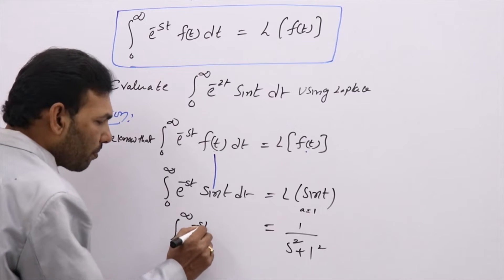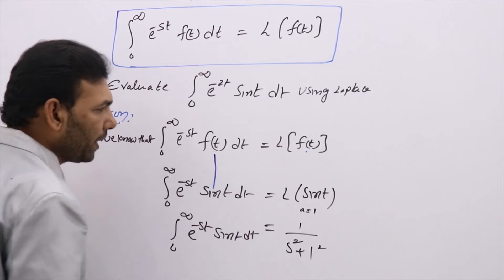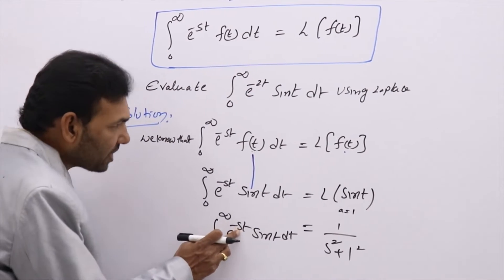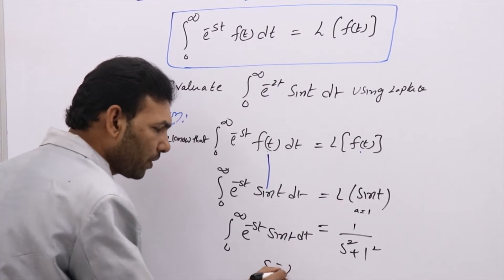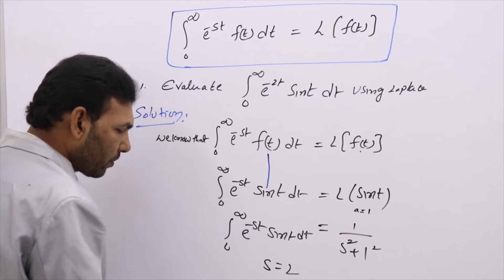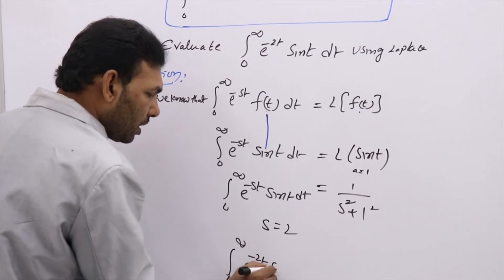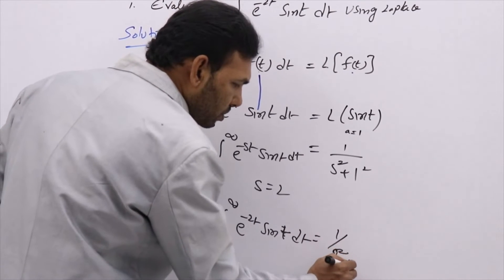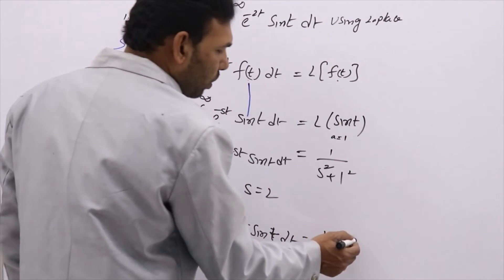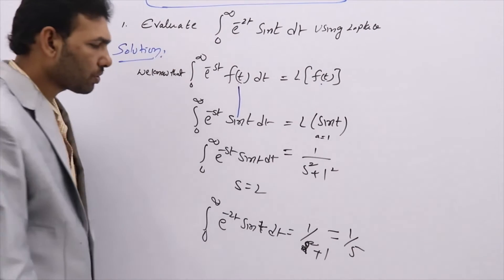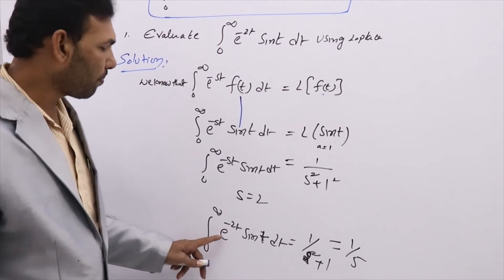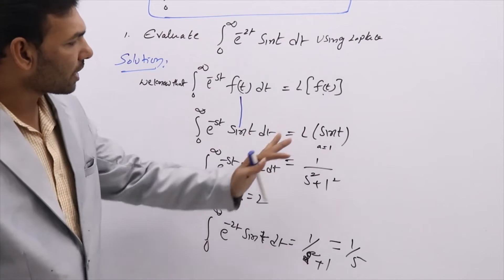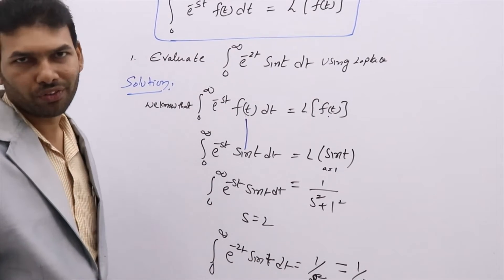That gives the value of the integral from 0 to infinity of e^(-st) sin(t) dt. But what we need is the integral from 0 to infinity of e^(-2t) sin(t) dt. This means we replace s with 2. Substituting s = 2: integral from 0 to infinity of e^(-2t) sin(t) dt equals 1/(4 + 1) = 1/5. So without using a single integration formula, we easily evaluated this integral using Laplace.